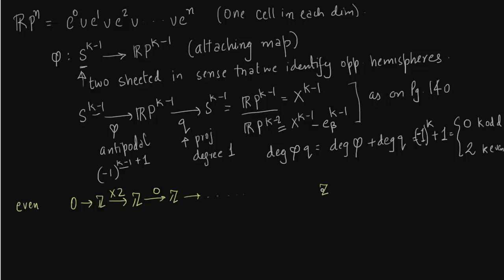For c0 always it goes to 0, it's always multiplication by 0. c1, odd, so multiplication by 0. And c2, even, so multiplication by 2. So that is pretty much it for n even.